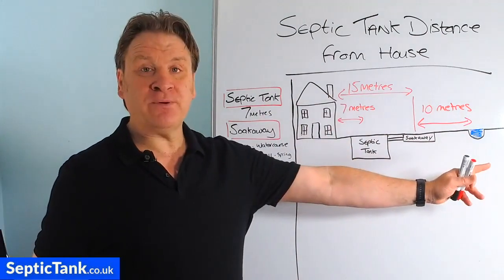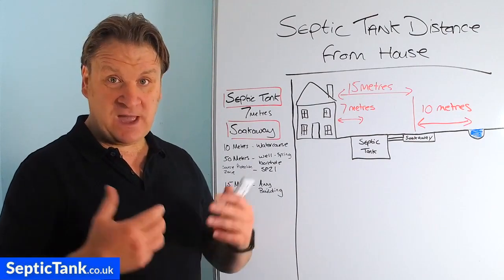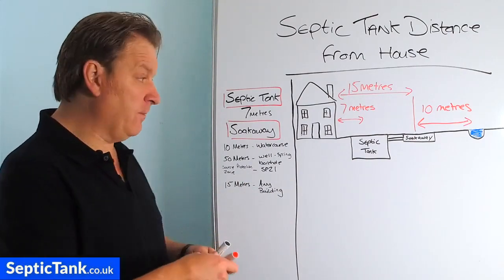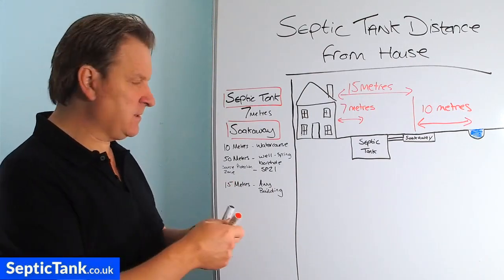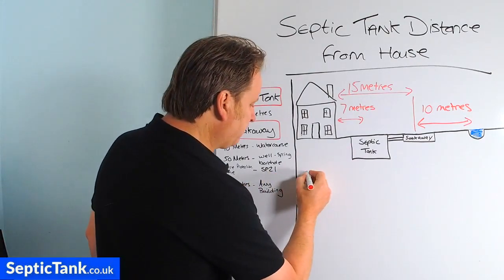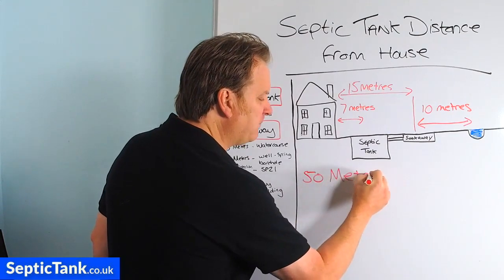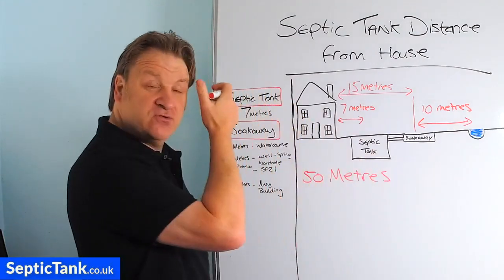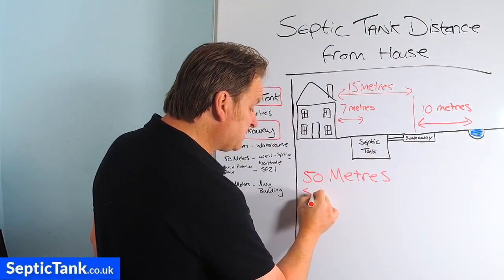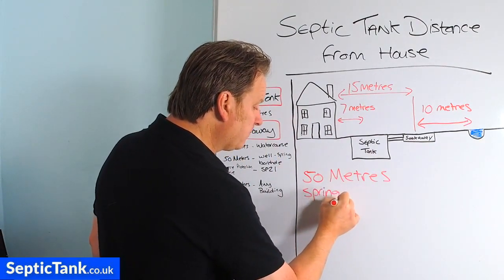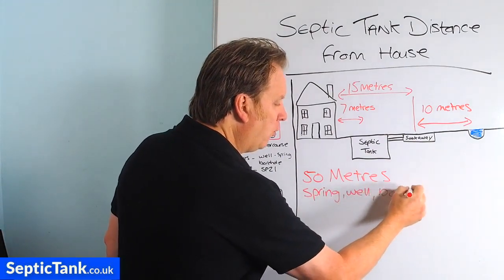You may have a spring, you may have a well, or you may have a borehole. So how far does a soakaway need to be away from those things? Well, building regs states that the soakaway needs to be at least 50 meters — which is about 150 feet — away from any spring, well or borehole.